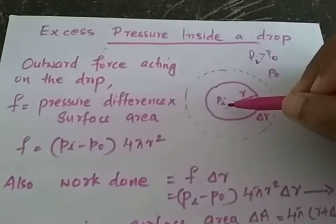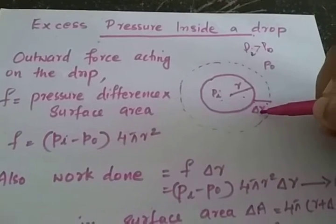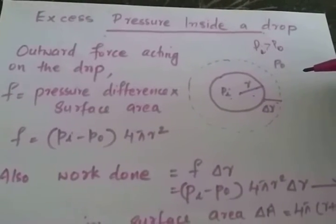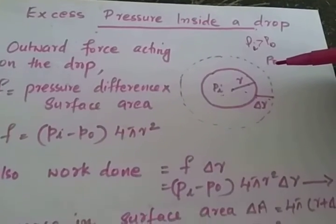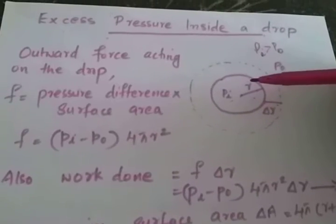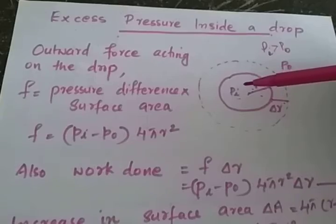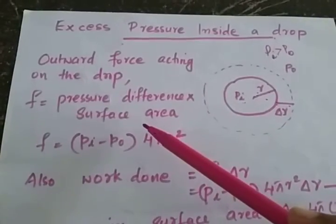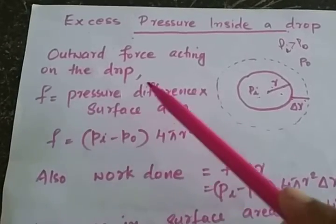This high pressure inside the drop tends to expand the liquid drop. As a result, the liquid drop expands by a small radius delta R, which is the amount through which the liquid drop has been expanded. The area of the liquid drop also increases by a small amount under this pressure difference. So what is the force acting on the surface of the drop? The outward force acting on the drop is: force is equal to pressure difference into surface area. So force equals Pi minus Po into 4πR².